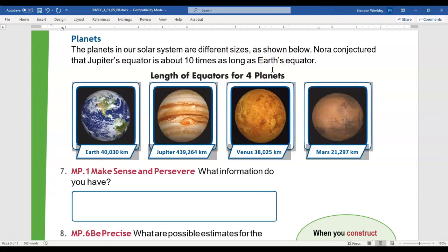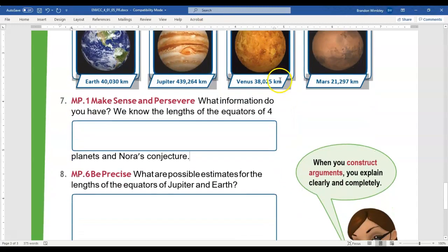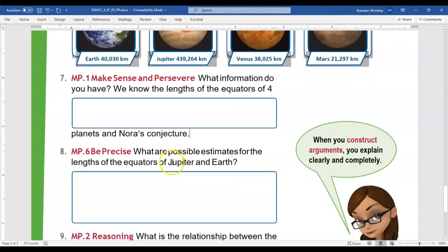Noor made a conjecture, meaning Noor made an educated guess, that Jupiter's equator is about 10 times as long as Earth's equator. What information do you have? So looking at these, what information do we know? We know the lengths of the equators of four planets, and we know Noor's conjecture. I like how they use that word instead of just knowledge or guess.